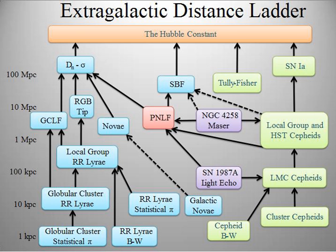The ladder analogy arises because no single technique can measure distances at all ranges encountered in astronomy. Instead, one method can be used to measure nearby distances, a second can be used to measure nearby to intermediate distances, and so on. Each rung of the ladder provides information that can be used to determine the distances at the next higher rung.